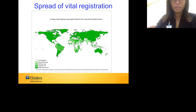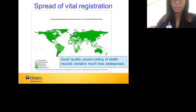Even where vital registration is done there's a question about its quality. If cause of death coding is done such that nearly all deaths are coded to one or two dump categories, it's really not much better than having no information at all. There's both a quantity and a quality issue. Nevertheless there has been progression in the spread of vital registration, though globally it's probably still under half of deaths that occur that would be cause-coded with good quality.